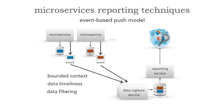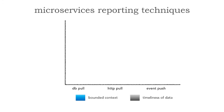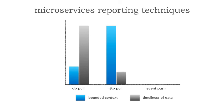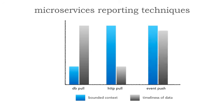Overall, reporting becomes a big challenge with microservices — something that, at least in my experience in the field, has become somewhat of an afterthought. But once you start distributing data, this event-based push model is at least one of the most effective ways of dealing with reporting. The database pull model breaks the bounded context but has good data timeliness since you're accessing the system of record. The HTTP pull model preserves the bounded context but has poor timeliness because it's always going to time out. But the event-based push model maximizes both bounded context and timeliness of data, therefore giving us both of these attributes.